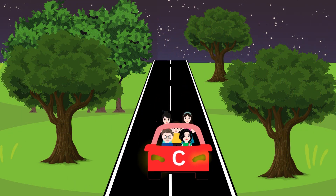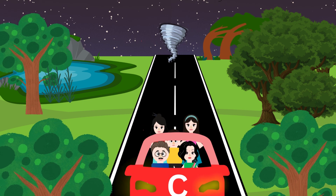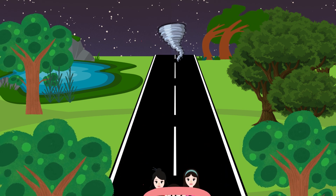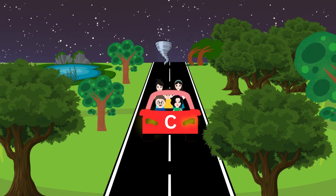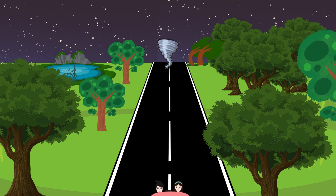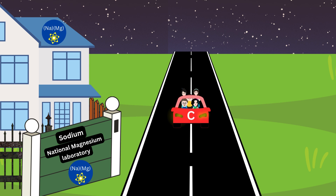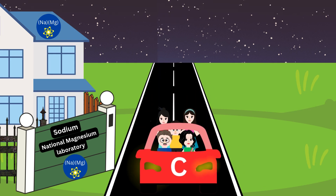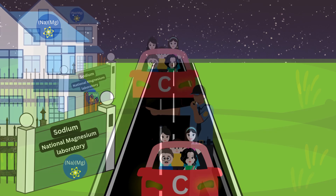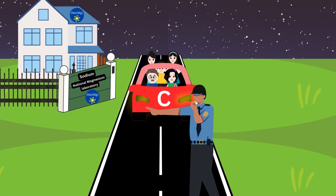The movie hall was one hour away from their home, but just 15 minutes away from home, a scary storm occurred with a round wind mass swirling in the sky. Everyone in the car got frightened. The father sped up the car to escape from the storm. The three children were standing in the open car, which was risky. When they reached near the Sodium National Magnesium Laboratory, all of a sudden a senior police officer stopped the car.